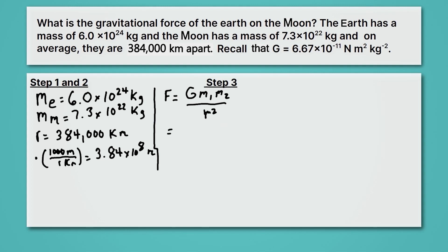We have big G from our problem. It's 6.67 times 10 to the minus 11th. And then we'll multiply by mass 1, which in this case, we'll just make it the Earth. You could do either order, and it would be fine. The Earth is 6.0 times 10 to the 24th. And then we'll multiply by the mass of the Moon, which is 7.3 times 10 to the 22nd.